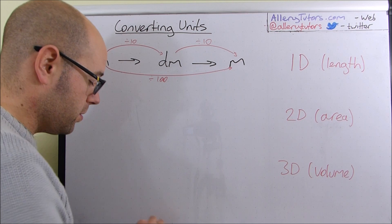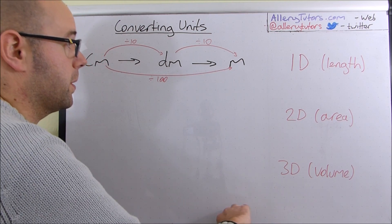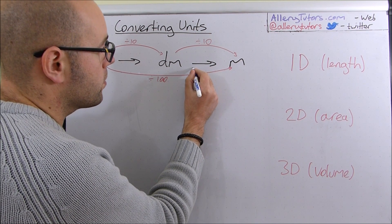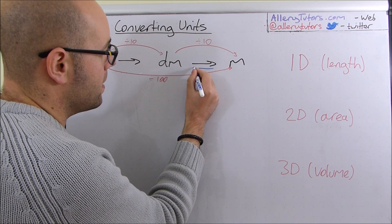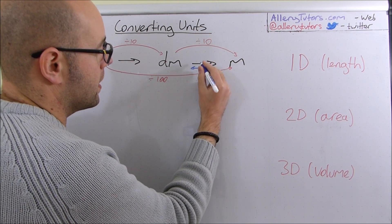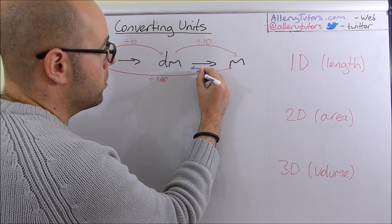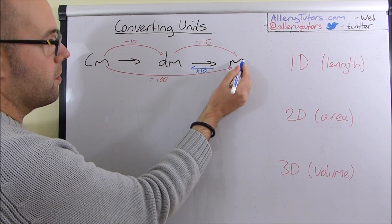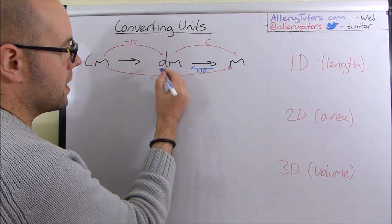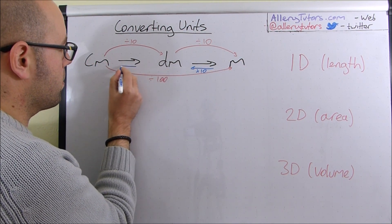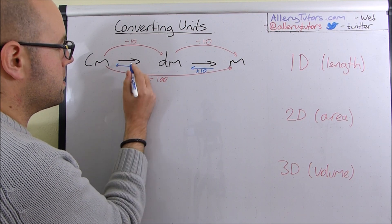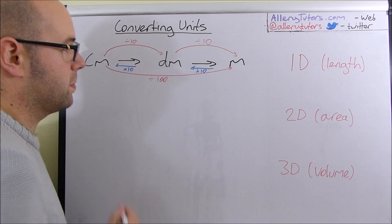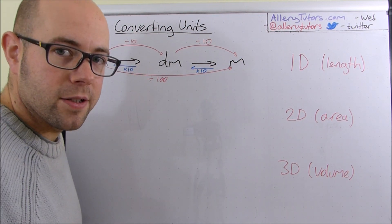Obviously if you go the other way — let's pick up on the blue — going that way it's going to be multiplied by 10. So going from metres to decimetres, and going from decimetres to centimetres, that's also multiplied by 10.